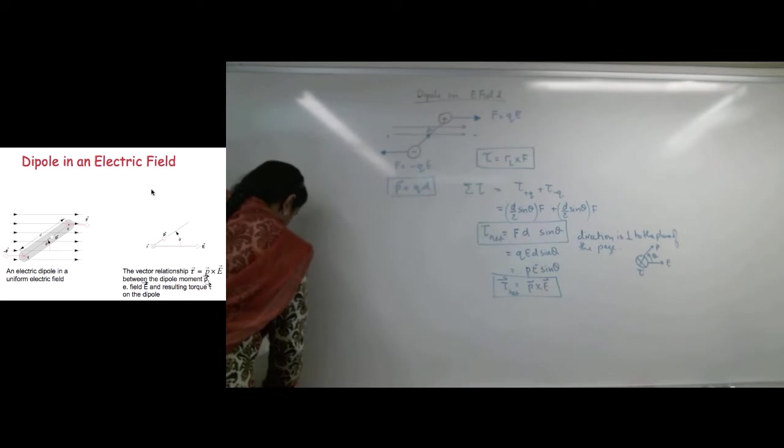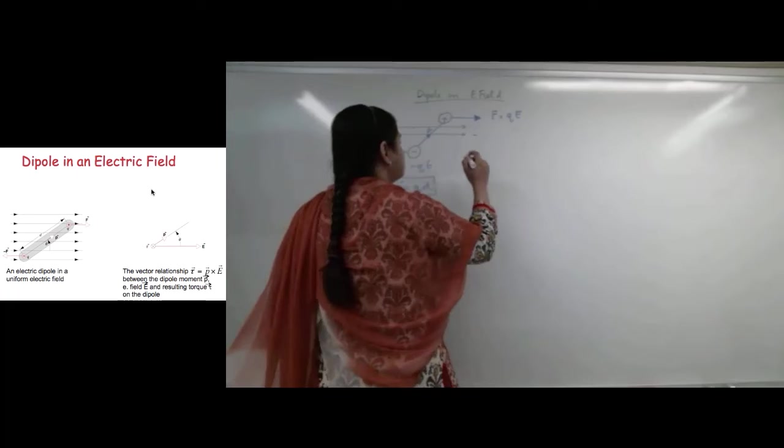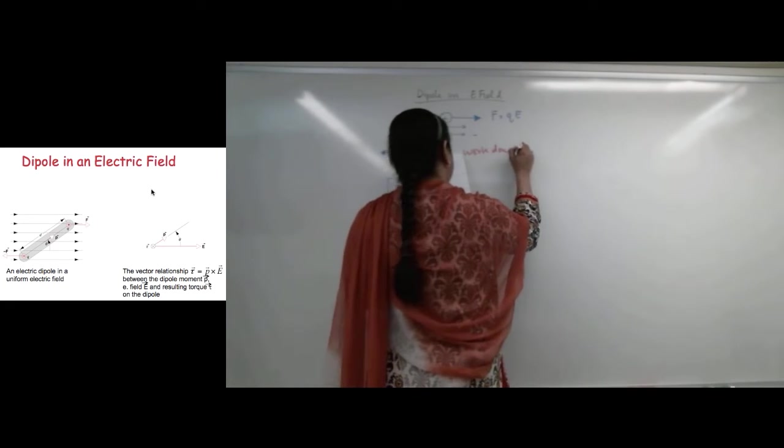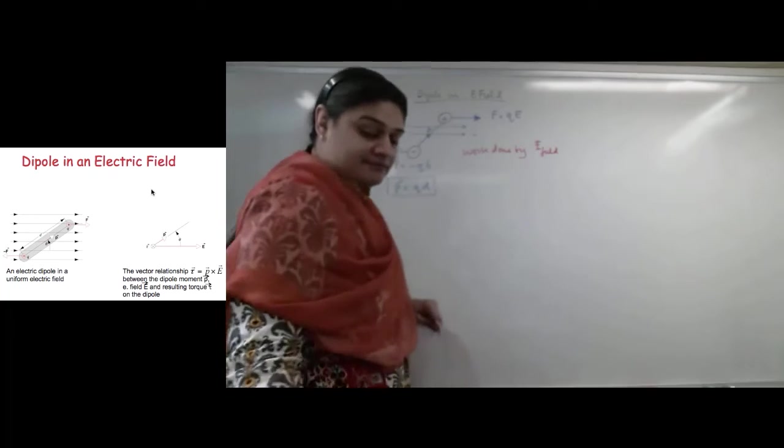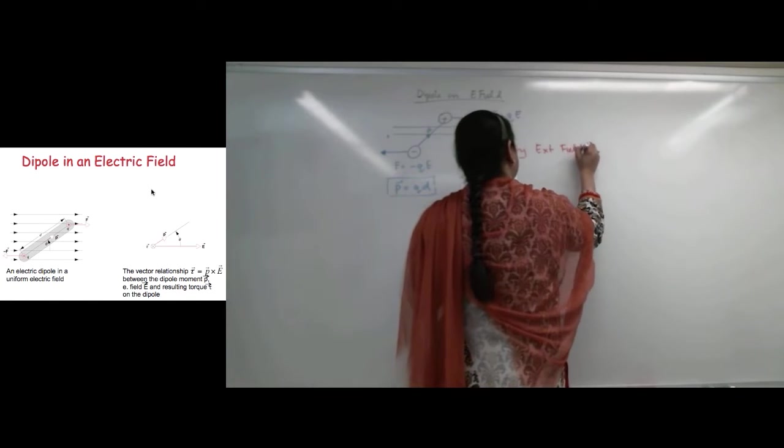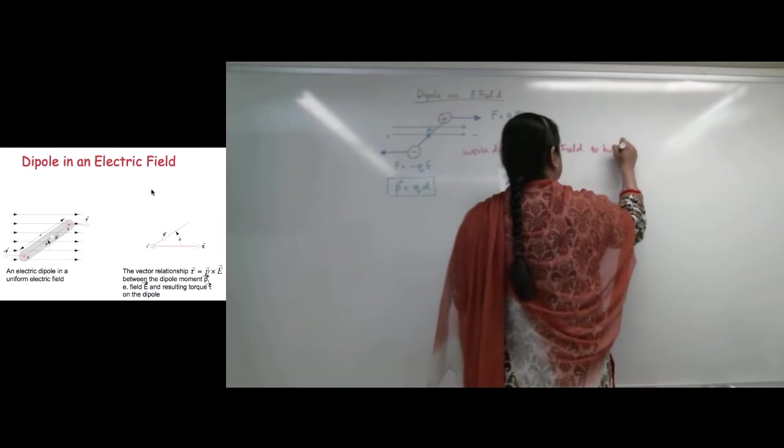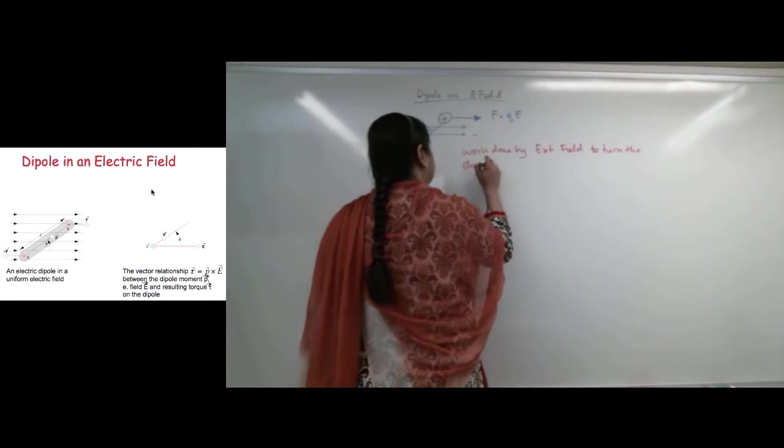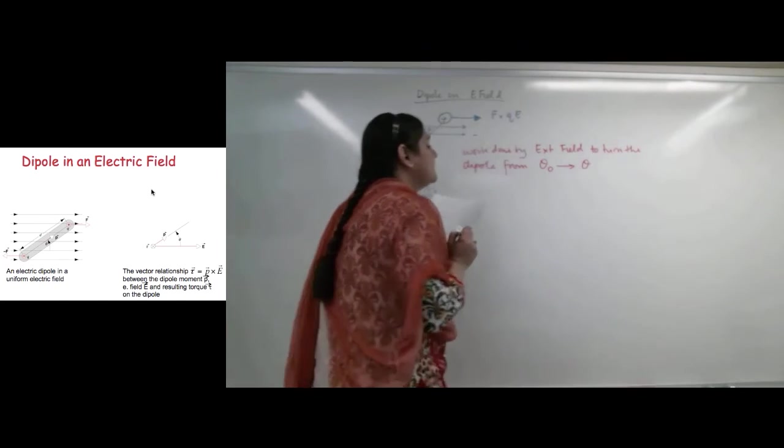Another thing that's really important is what is the work done by this kind of a dipole? So, work done by an external field in turning the dipole moment from some initial angle to some final angle. So once this is done, the next thing is work done by external field. I should call it external field. Work done by external field to turn the dipole from some initial angle theta 0 to some final angle theta. How will we find that?